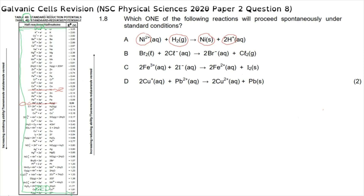Option B involves going from bromine molecules to bromine ions. Finding this on the table of standard reduction potentials, that half reaction is a reduction half reaction where bromine is gaining electrons. The other half reaction — from chlorine ions to chlorine molecules — is also an oxidation half reaction, which again shows that this is a non-spontaneous reaction.